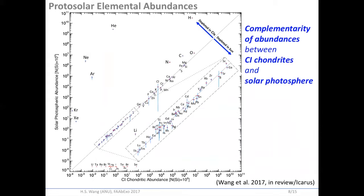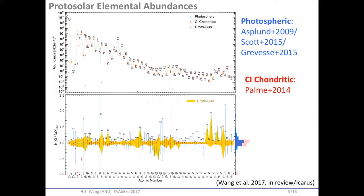This diagram shows the CI-chondritic abundance on the x-axis and the solar photosphere abundance on the y-axis. Everything along the diagonal line is essentially identical between the two datasets. For elements above the line, like the noble gases, they are substantially depleted in CI chondrites. For elements below the line, like lithium, it's depleted in the Sun but preserved in CI chondrites. For elements aligned here, they have no observed photosphere abundances. Based on the complementarity of abundances between CI chondrites and the solar photosphere, we use the latest estimates to redetermine the proto-solar abundances. The lower panel shows the variation of our estimates and the red diagram shows the distribution of our reference data.